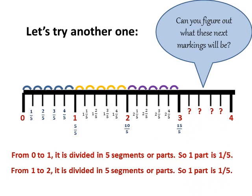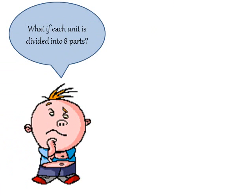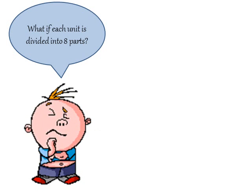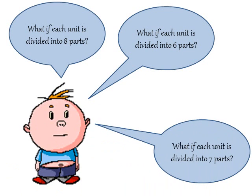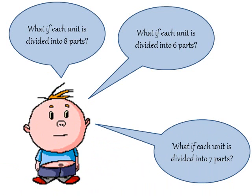Can you figure out what these next markings will be? What if each unit is divided into eight parts — how are you going to call the small markings? We've done divided into three parts and five parts, but what about eight parts? How about if it's divided into six parts? Or seven parts? So that's a lot of thinking, but I'm sure you can figure that one out. Have fun!